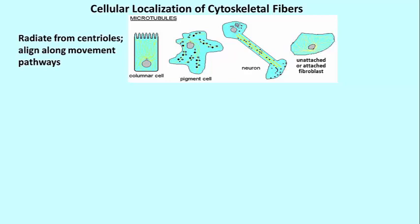In pigment cells and in neurons, you have a very dramatic example of the role of microtubules in moving vesicles around. Motor proteins use microtubules as tracks and essentially walk along these tracks, carrying different vesicles.